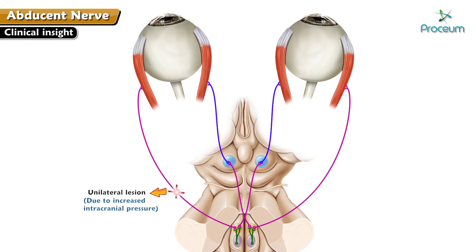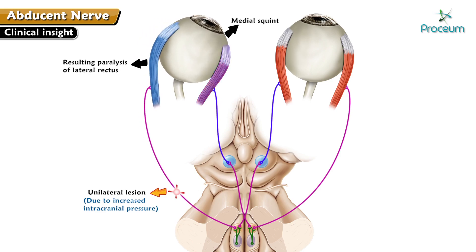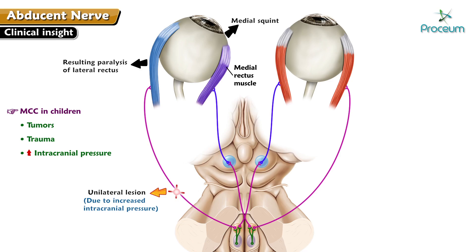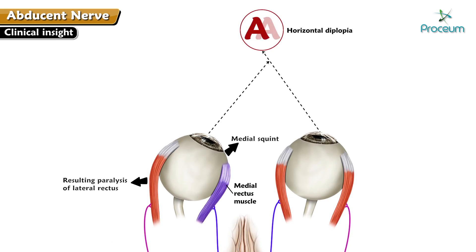Clinical insight. Unilateral lesion of the abducens nerve is common due to increased intracranial pressure. This results in paralysis of the lateral rectus, characterized by medial squint due to unopposed action of the medial rectus muscle. The most common causes in children are tumors, trauma, increased intracranial pressure, and congenital causes. Horizontal diplopia when patients attempt to look towards the paralyzed side can be appreciated.